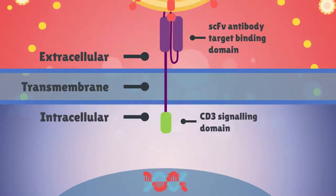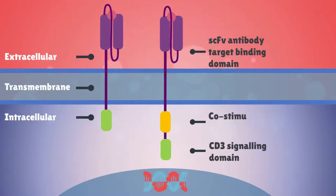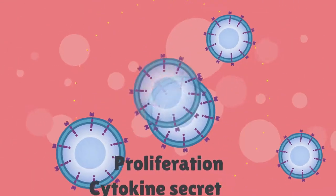The second generation added a co-stimulatory region like CD28 or 41BB to boost the proliferation, cytokine secretion, resistance to apoptosis, and in vivo persistence.